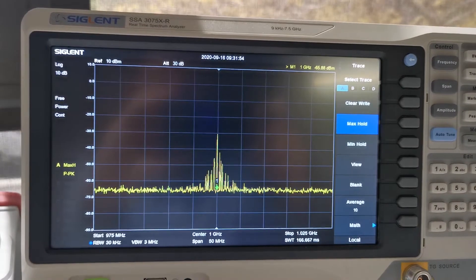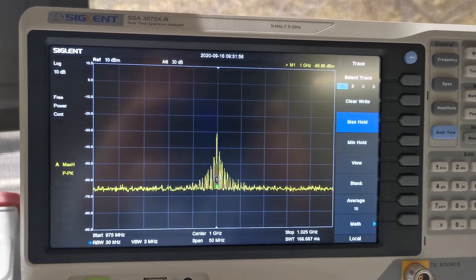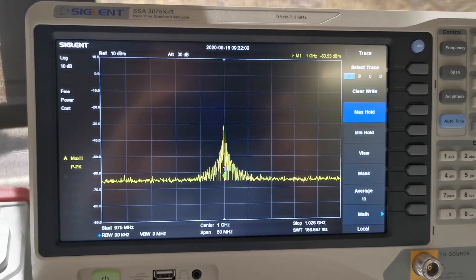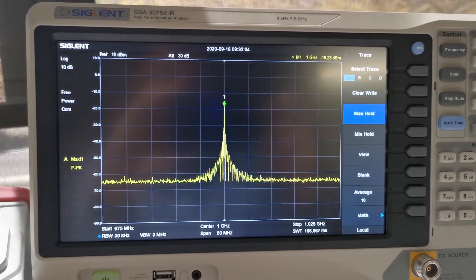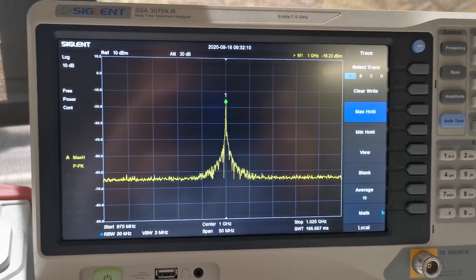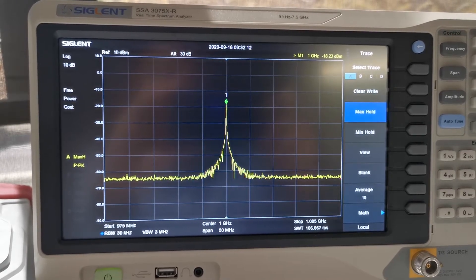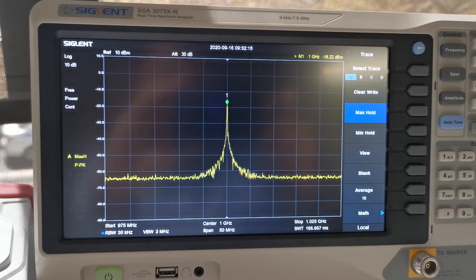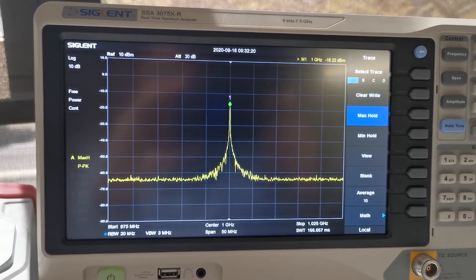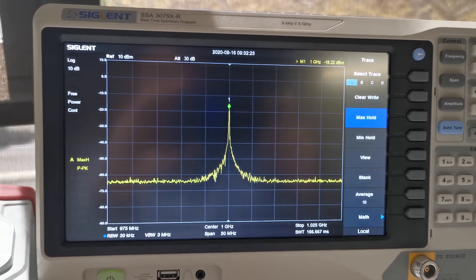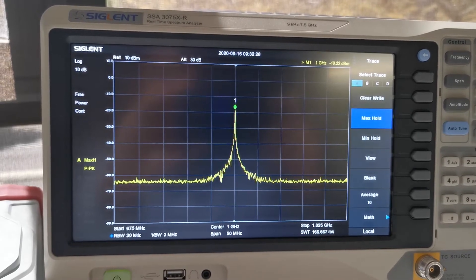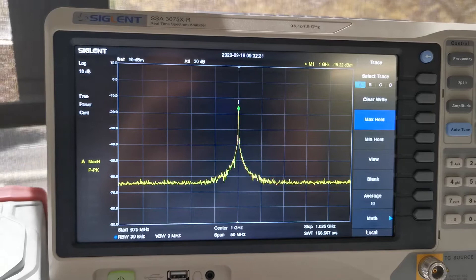However, it's not the end of the world for the normal spectrum analyzer. You can still use the max hold function to capture the transient signal. The max hold function is very useful to use multiple testing results to accumulate the spectrum display. It's not very accurate and it takes a long time to get a stable result, but it's better than nothing. Now we know that for 1 by 1000 duty cycle RF pulse, you can still use the max hold to get a reasonable result by the normal spectrum analyzer within 10 to 20 seconds.